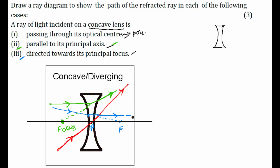So these are the three cases. First: a light ray passing through the pole goes undeviated. Second: a ray going parallel to the principal axis refracts such that extending it back meets the principal axis at the focus. Third: a ray pointing towards the principal focus refracts and goes parallel to the principal axis. These are the three different rays and their behaviors.